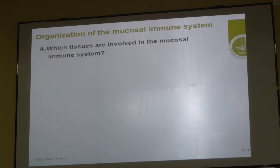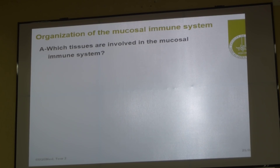Before going into the details, what you have to see is how is the organization of the mucosal immune system — which tissues are involved? MALT, GALT, and NALT. Does that make the mucosal immunity? Peyer's lymph nodes — very good. What else? Paneth cells. We will see all of that.